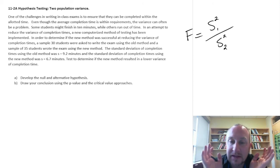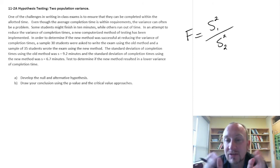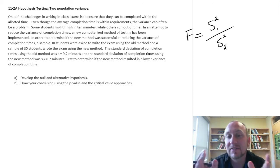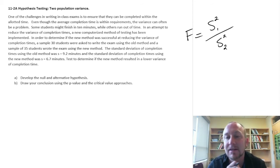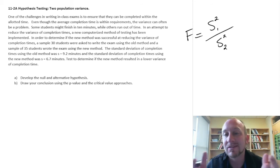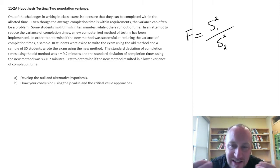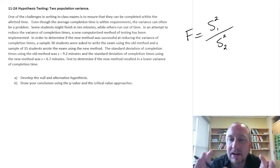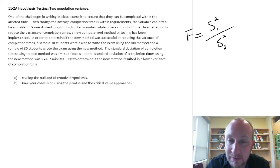In respect to the test statistic, the F-statistic is probably the easiest test statistic that you'll calculate — it's just the ratio of these two numbers, nothing much to it. The challenge here is that each of these two chi-squared variables has its own degrees of freedom, dependent on sample size.